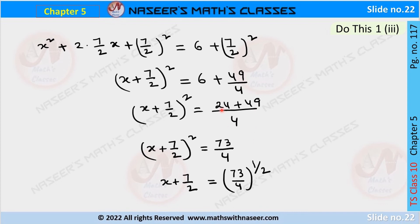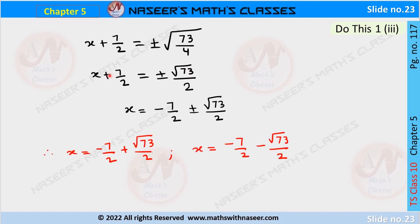After simplification: 6 = 24/4, so the RHS is 24/4 + 49/4 = 73/4. Therefore (x + 7/2)² = 73/4. Taking the square root of both sides: x + 7/2 = ±√(73/4).